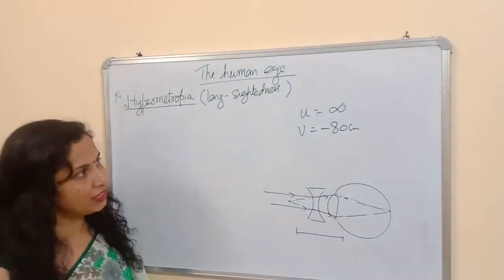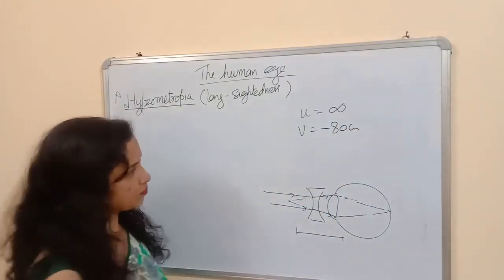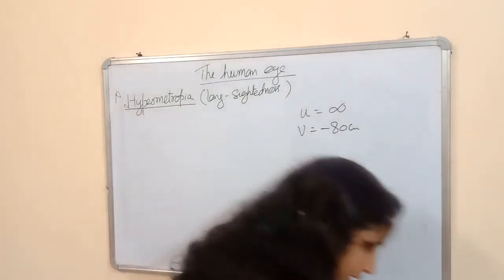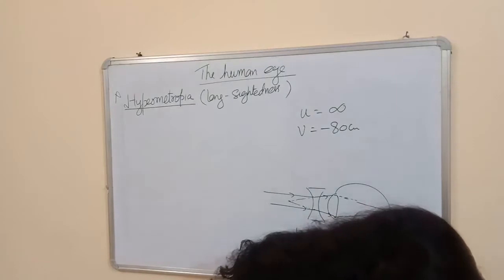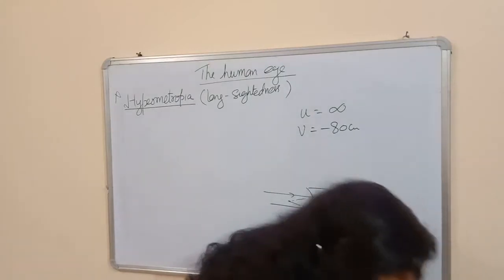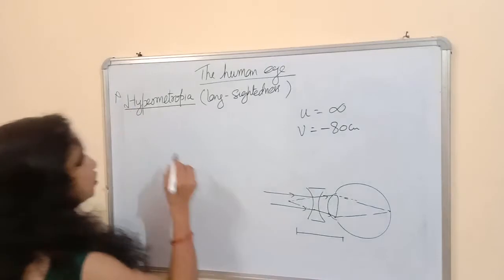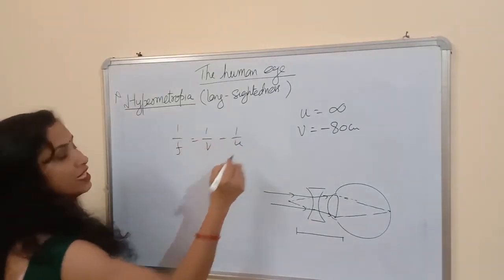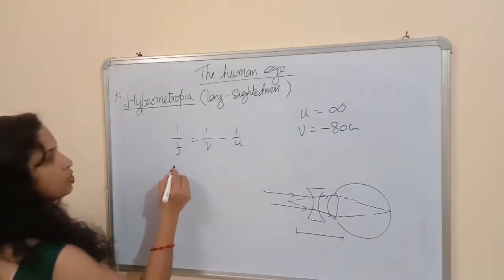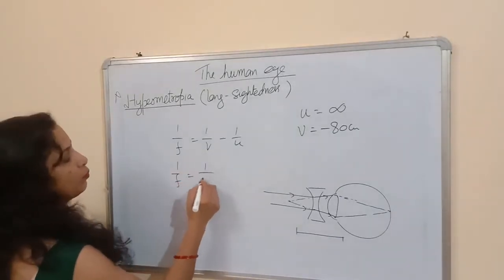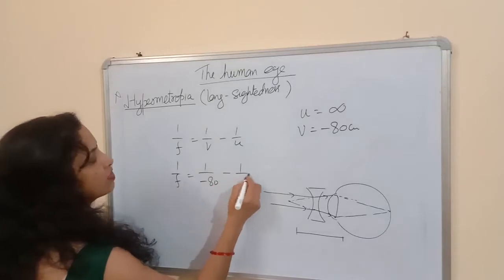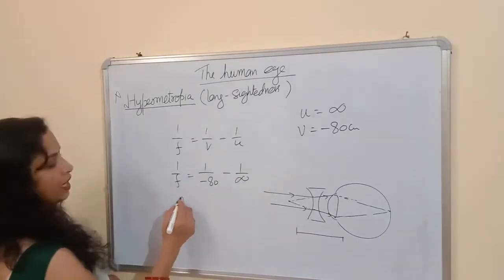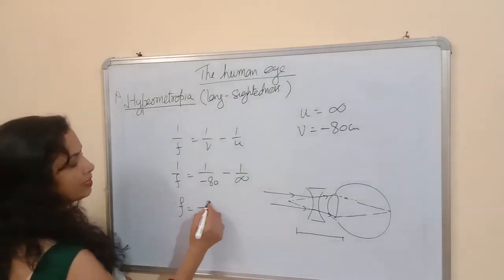V is minus 80 cm — that should be clear. Now we have to find the focal length of the lens to correct this vision. We use the lens formula: 1/f = 1/v − 1/u. So 1/f = 1/(−80) − 1/u. Since u is infinity, 1/u equals zero. Therefore f = −80 cm.